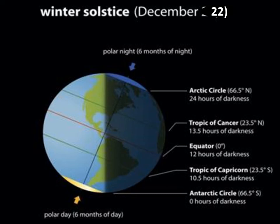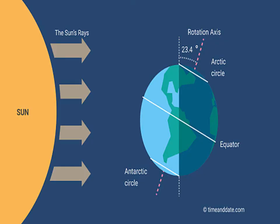For better clarity, let's see this diagram. On 22nd December, the Tropic of Capricorn receives direct rays of the sun as the south pole tilts towards it. As the sun rays fall vertically on the Tropic of Capricorn, a large portion of the southern hemisphere gets light. Hence the southern hemisphere enjoys summer, having longer days and shorter nights. This position of the earth is called the Winter Solstice.